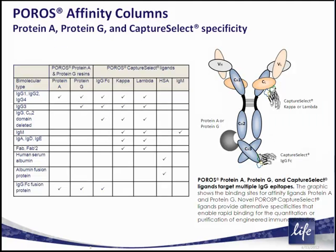A comparison of Protein A, G, and Capture Select binding specificities is shown in the table and is also included in the Poros Affinity column product bulletin. The antibody cartoon shows the location of binding epitopes for Protein A, G, and Capture Select ligands. Note that in situations where modifications to an antibody's FC region impact Protein A or G binding, the Capture Select IgG FC product may provide a solution for quantitation or purification.